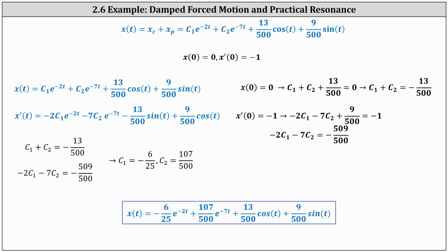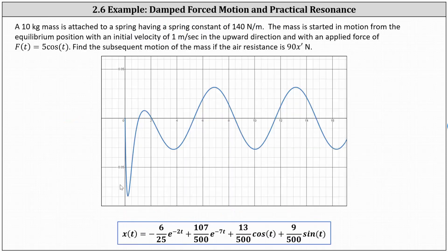Before we go, let's look at the graph of the motion of the mass. Remember, when x(t) is negative the motion is upward, and when x(t) is positive the motion is downward from the equilibrium position. I hope you found this helpful.